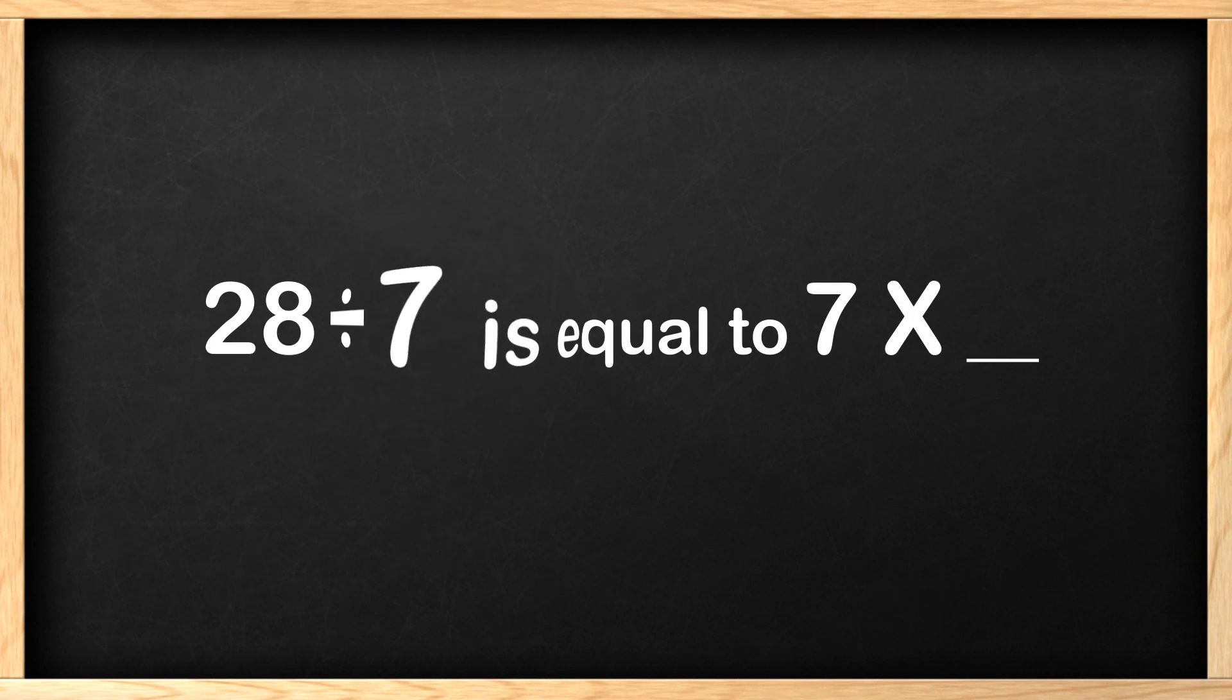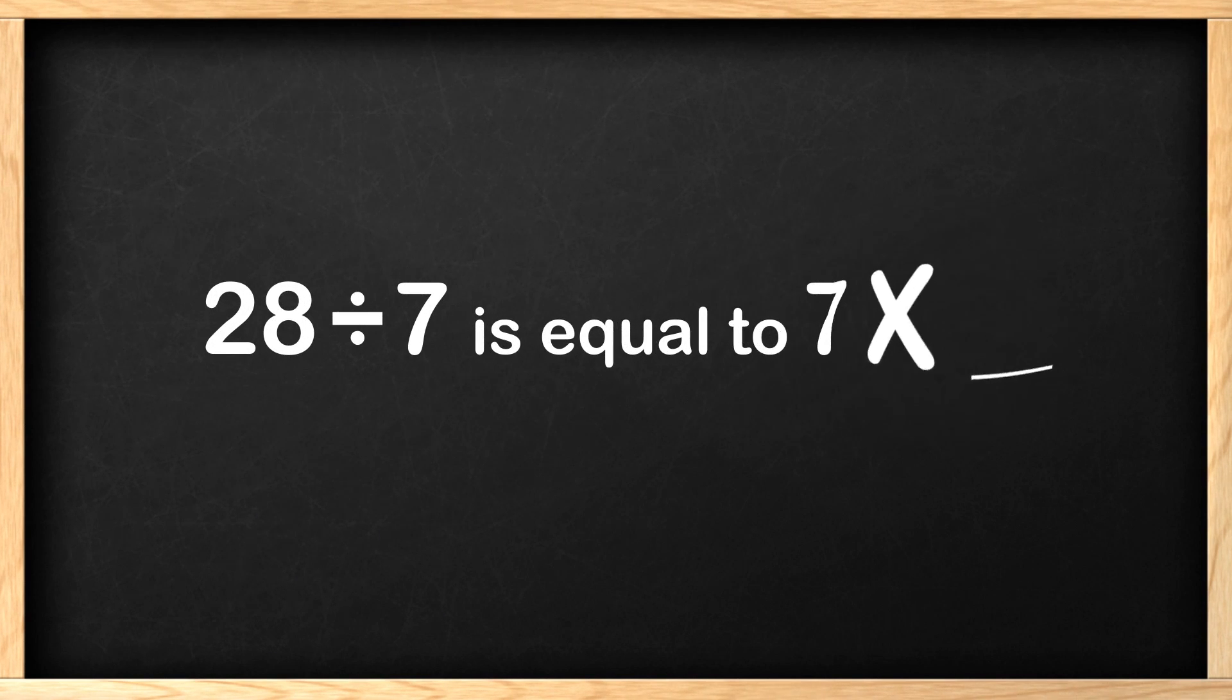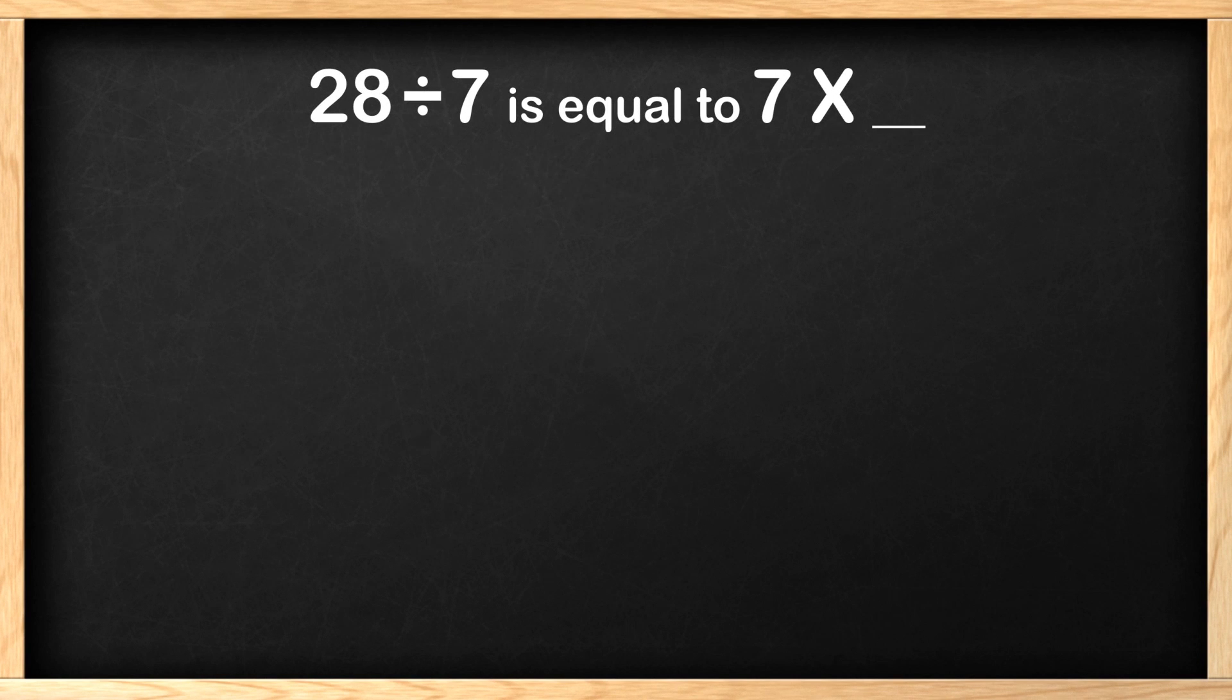This problem says 28 divided by 7 is equal to 7 multiplied by blank. In order to solve problems like this, we can learn how to turn division problems into multiplication problems. Let's start with writing down just the first part of the problem. Now that we have the division problem, let's write down what the multiplication problem would be. We know that the first number in the division problem is the product in a multiplication equation, so let's put down an equal sign and 28 as the product.